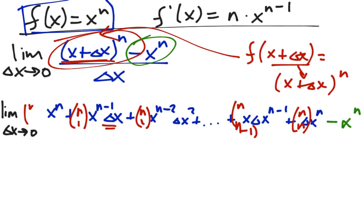Technically, the first coefficient is n choose 0. That's fine too. It all belongs there. So we have all those things and it's all divided by, don't forget the delta x on the bottom. There it is. Sweet.